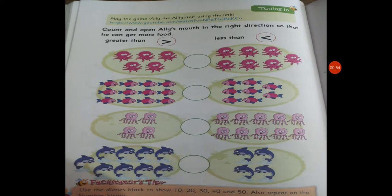Let's count the octopuses. One, two, three, four, five. There are five octopuses. And here, one, two, three, four, five, six, seven. There are seven. So is five more or seven more? Seven is more.